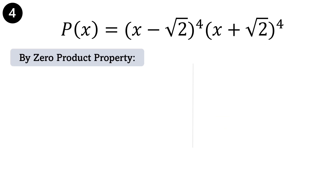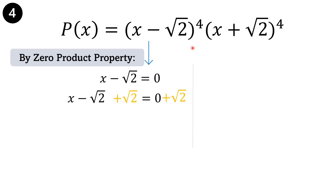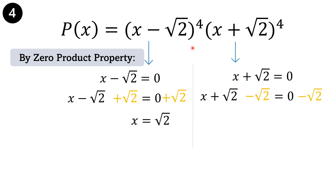Next example: p of x equals the quantity of x minus square root of 2 raised to the 4th power times the quantity of x plus square root of 2 raised to the 4th power. Applying the zero product property, the first binomial x minus square root of 2 equals 0. Get the additive inverse. We have x is equal to square root of 2. On the next binomial, x plus square root of 2 equals 0. Getting the additive inverse, we have x is equal to negative square root of 2.